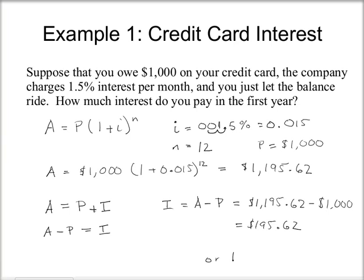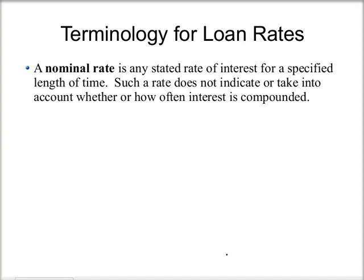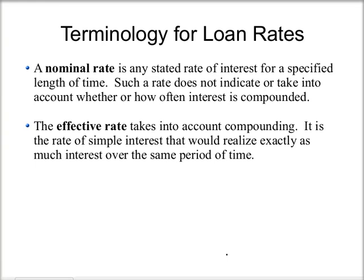This is 19.562% of your initial balance on the credit card. Now let's talk about some terminology for loan rates. A nominal rate is any stated rate of interest for a specified length of time; it does not indicate whether or how often interest is compounded. You can have the same nominal rate but different compounding periods. The effective rate takes into account compounding — it is the rate of simple interest that would realize exactly as much interest over the same period of time. The 19.562% from our example is the effective rate of the credit card interest.